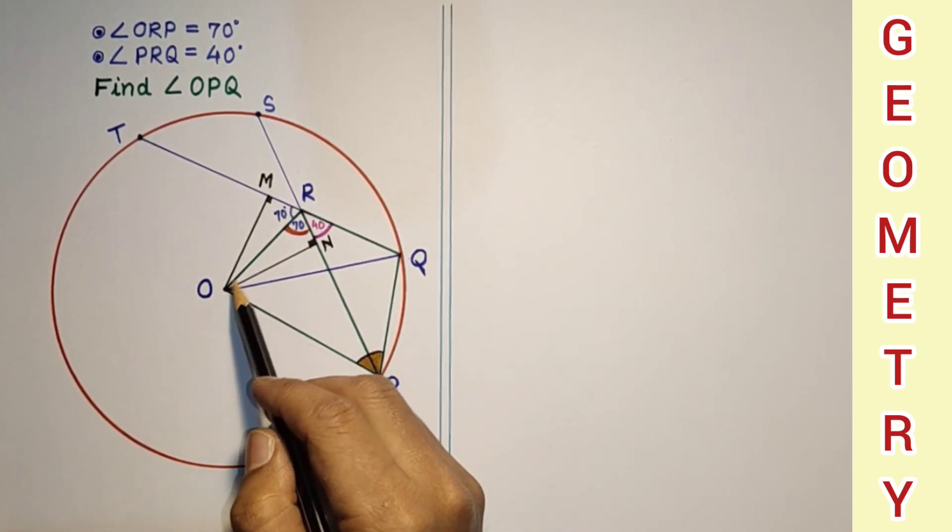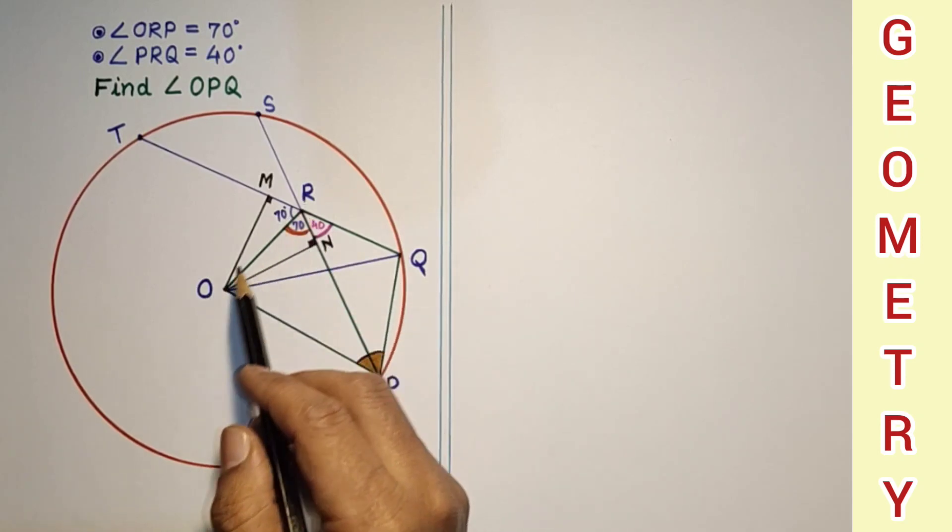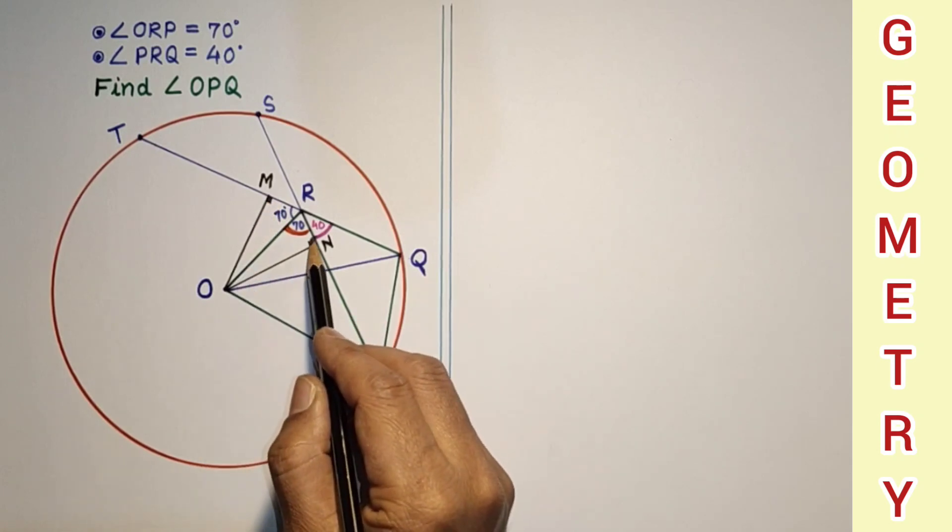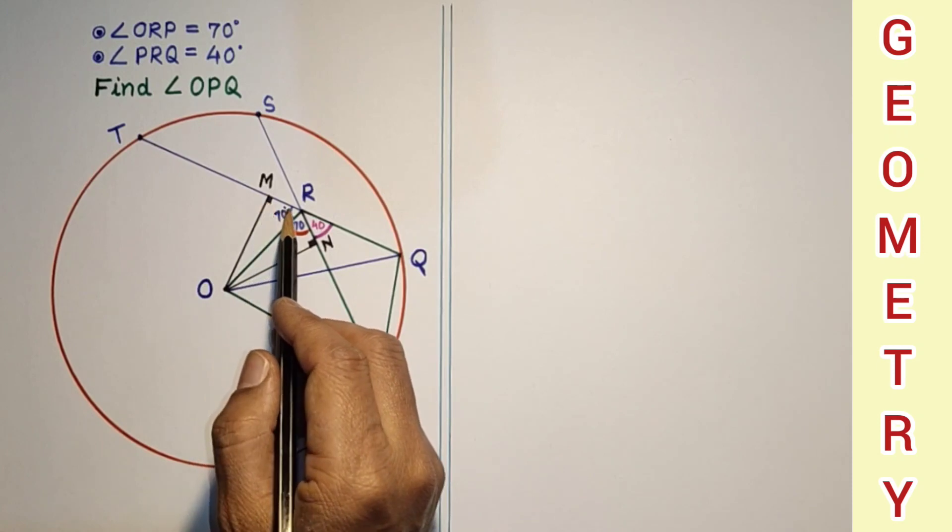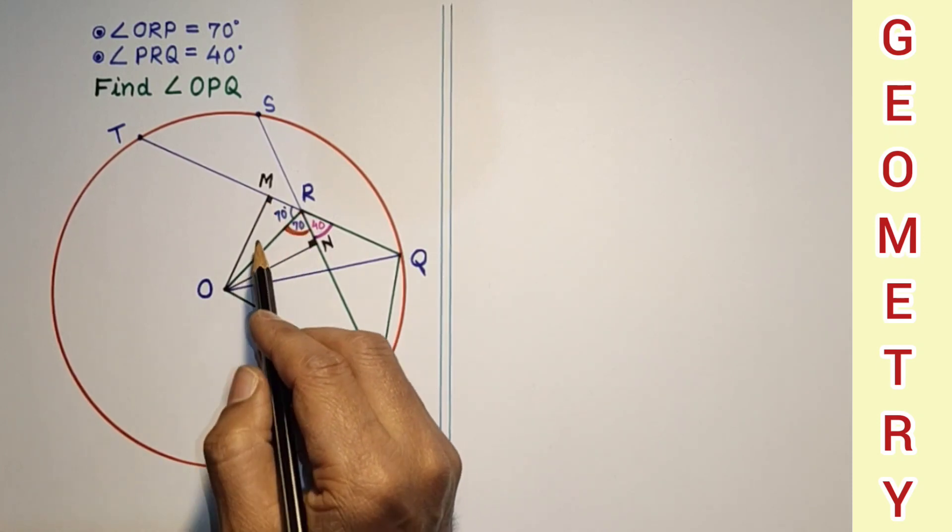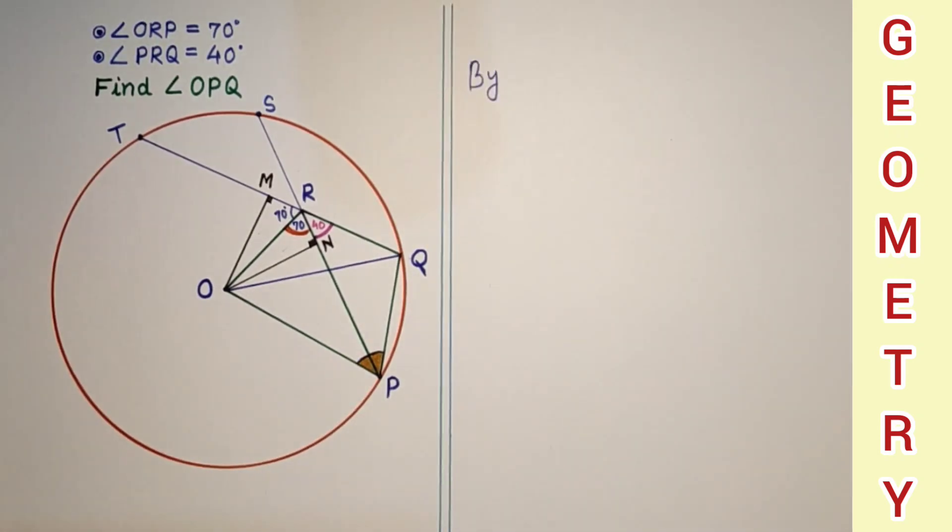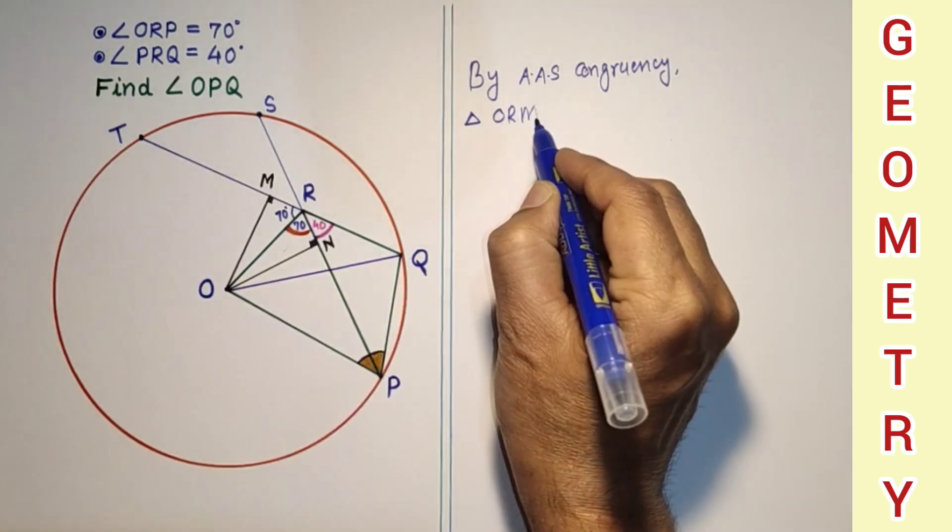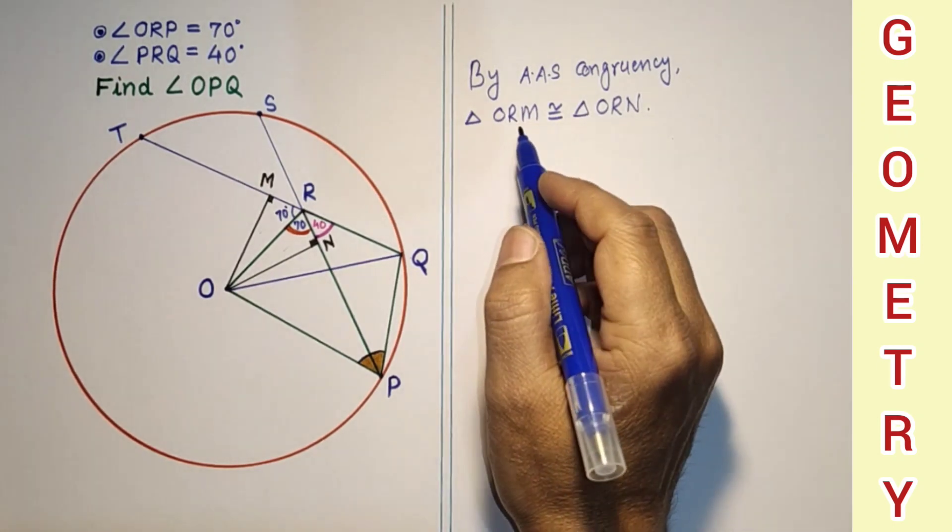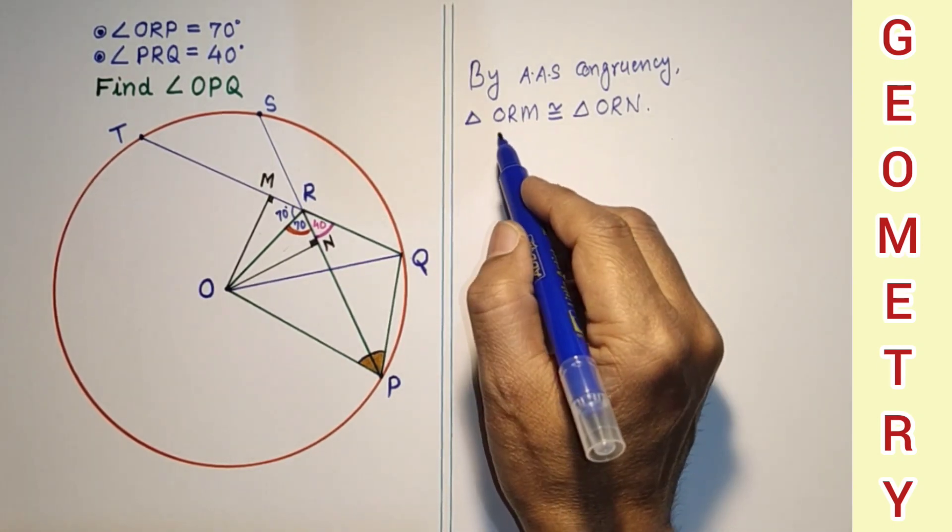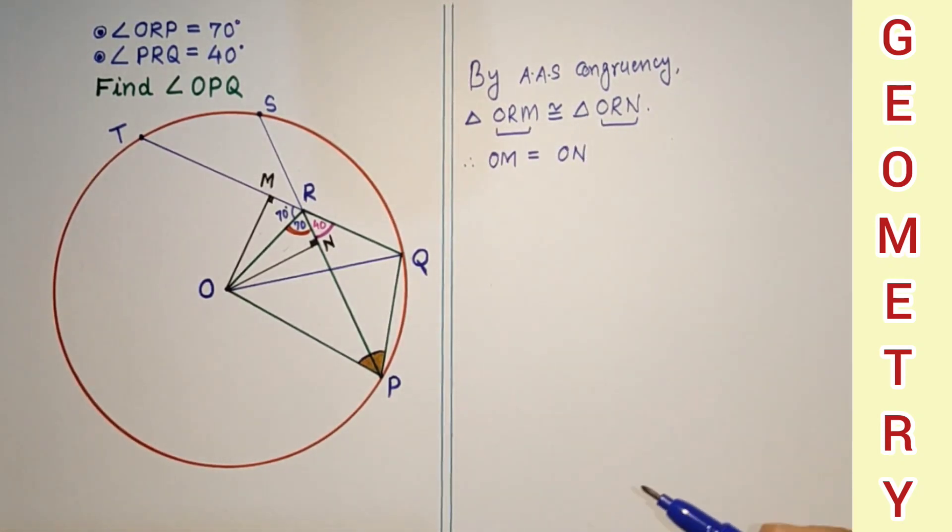Now in these two triangles ORM and ORN, this OR is common in both the triangles, and this angle is 90 degrees, this angle is 90. This is 70, this is 70. So by angle-angle-side test, these two triangles are congruent. So by AAS test of congruence, triangle ORM is congruent to triangle ORN, so corresponding sides will be equal, OM is equal to ON.